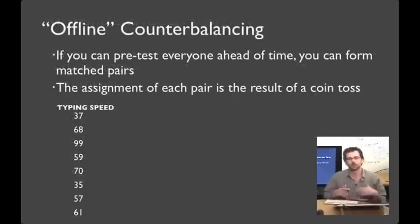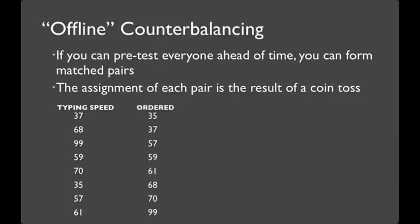Let's walk through an example. If you can pretest everyone ahead of time, one slick thing that you can do is form matched pairs. So, say we get the typing speeds that we see here, and after ordering they look like this. We can group them into pairs. And then, for each pair, we can conceptually flip a coin about which of them is going to land in which of the two conditions.